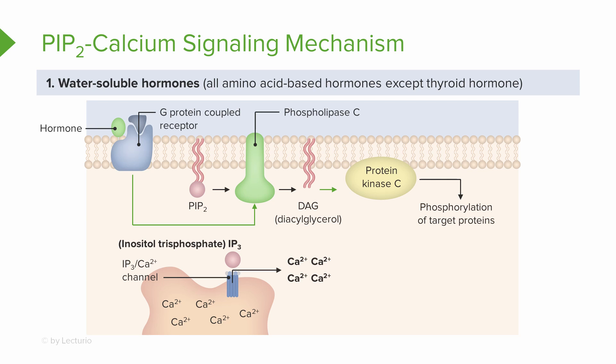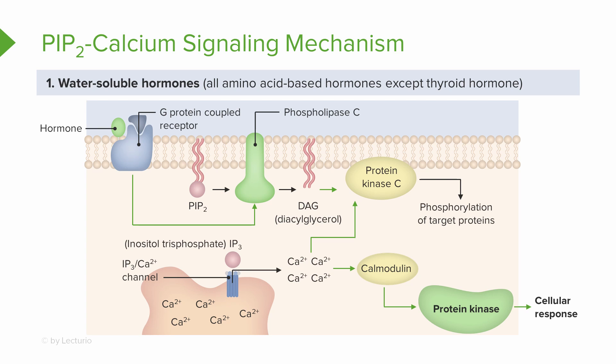IP3 causes calcium to be released from intracellular storage sites inside the cell. The calcium then acts as another second messenger. Calcium alters enzyme activity and channel function, or it binds to regulatory proteins such as calmodulin. Once calcium is bound to calmodulin, this activates enzymes which then amplify the cellular response.